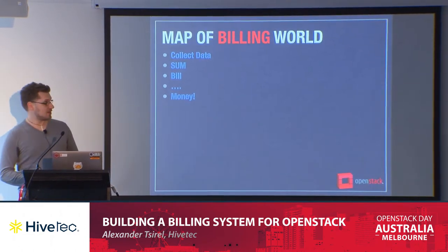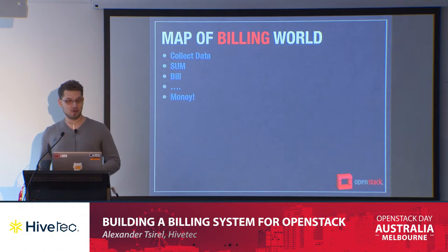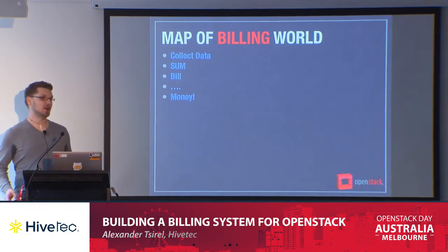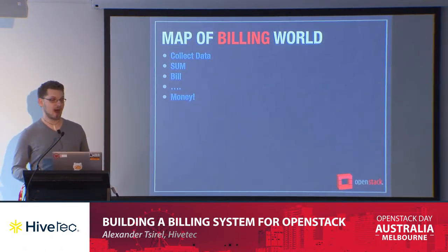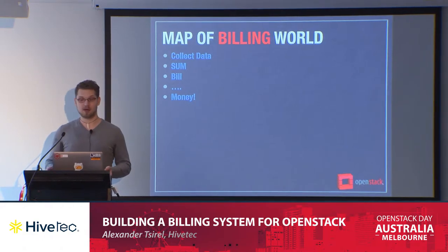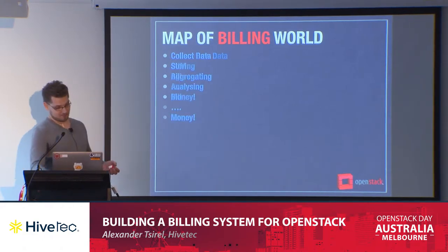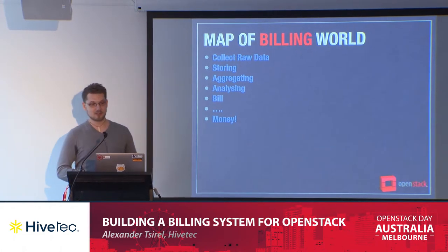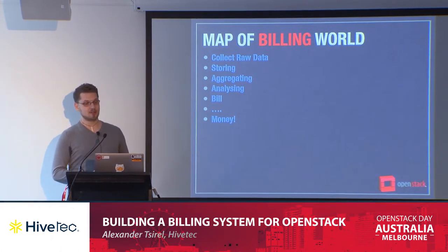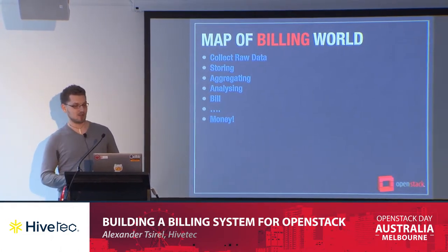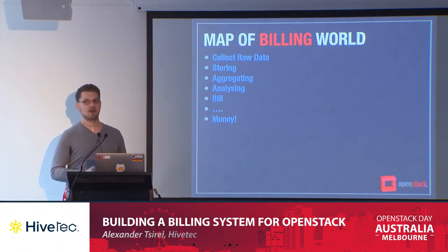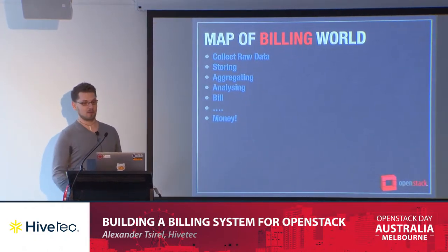The general map of the billing world looks like this: we are collecting data, we sum it up, we issue the bill and wait for money. At a closer look, it looks like we need to collect raw data, store this data, aggregate, analyze, and issue a bill based on that and wait for money.